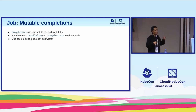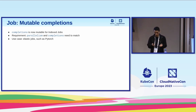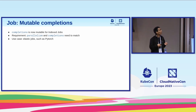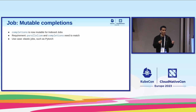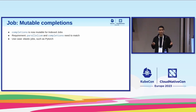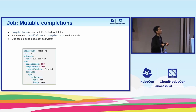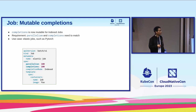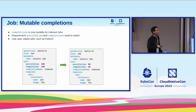The next feature is rather simple: we made the completions field mutable. It's a validation relaxation with one requirement — parallelism and number of completions need to match. The reason is that multiple jobs can scale up and down; one example is PyTorch. We wanted to accommodate the job API for a wider set of applications, so you can now mutate configured parallelism and completions to have a different scale.